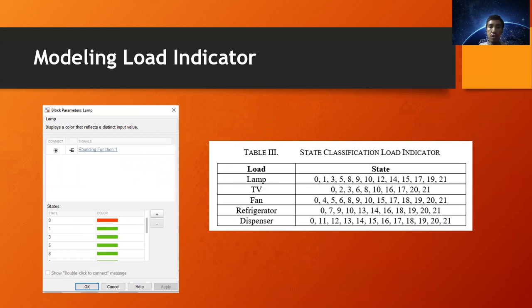Next, the modeling load indicator. In this study, we use 5 types of loads with 16 combination to make it easy to see the result of monitoring and identification. In addition, two measuring features that can be directly read. Then the load indicator is built. For modeling the load indicator using the block link feature on Simulink, the following figure shows a modeling example for a load indicator with the number of states consisting of 0, 1, 3, 5, 8, 9, 10, 12, 14,